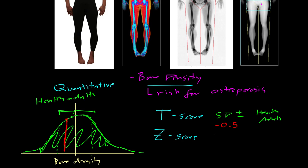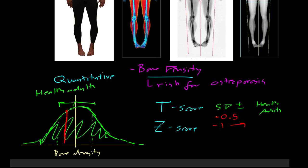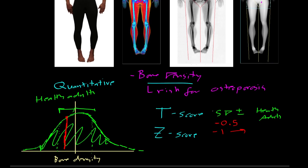Generally T-scores of negative one are classified as bad, meaning you need to do something to increase your bone density exercise or bisphosphonate medication or other strategies. So that's T-score.